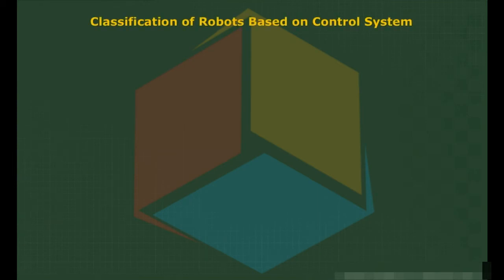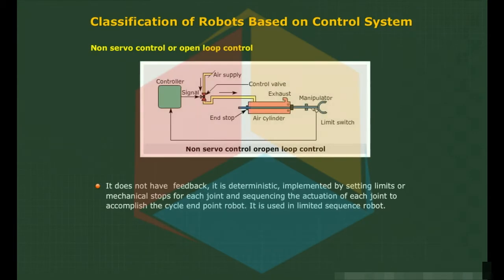Classification of robots based on control system. Non-Servo Control, or Open Loop Control, does not have feedback. It is deterministic, implemented by setting limits or mechanical stops for each joint and sequencing the actuation of each joint to accomplish the cycle end point robot. It is used in limited sequence robots.